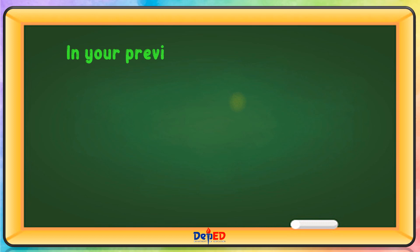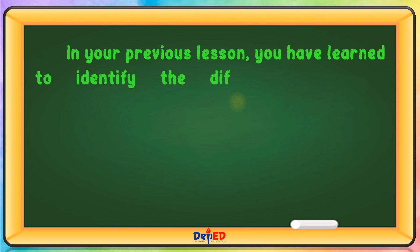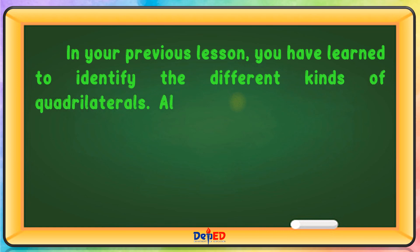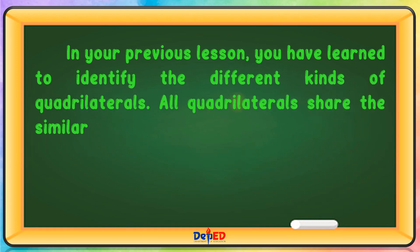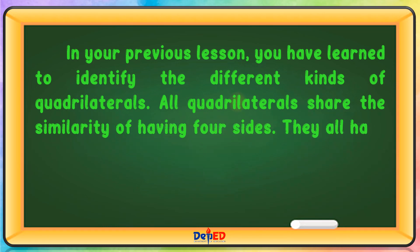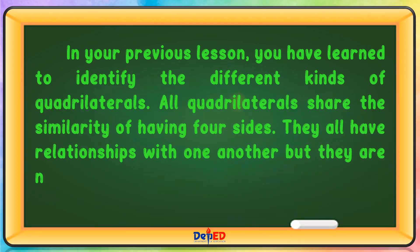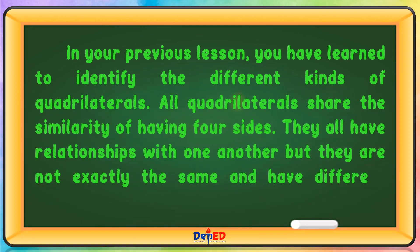In your previous lesson, you have learned to identify the different kinds of quadrilaterals. All quadrilaterals share the similarity of having four sides. They all have relationships with one another, but they are not exactly the same and have different properties.